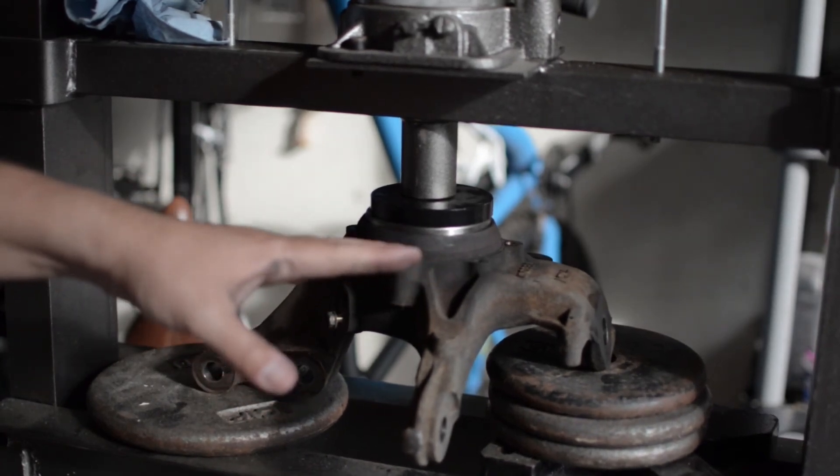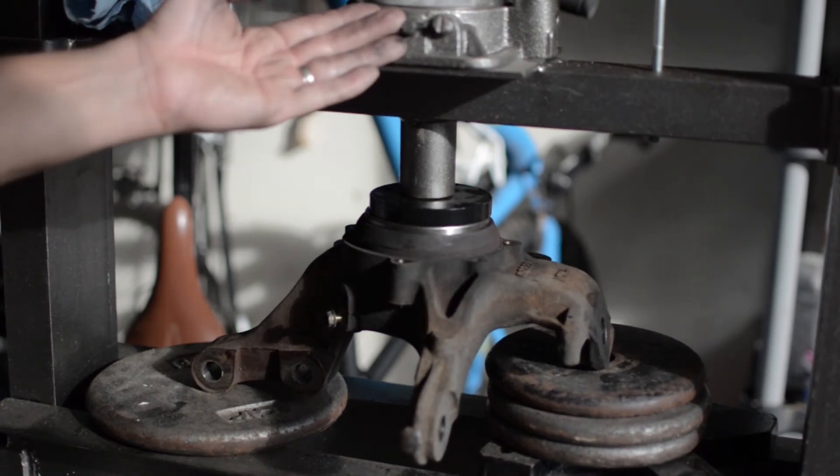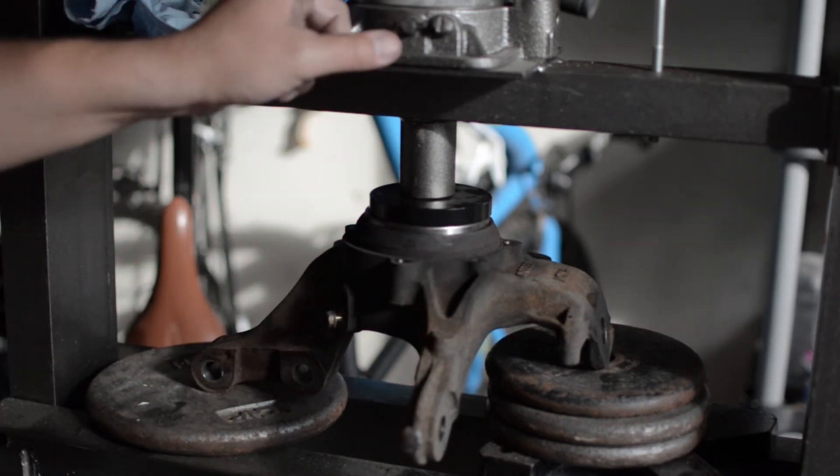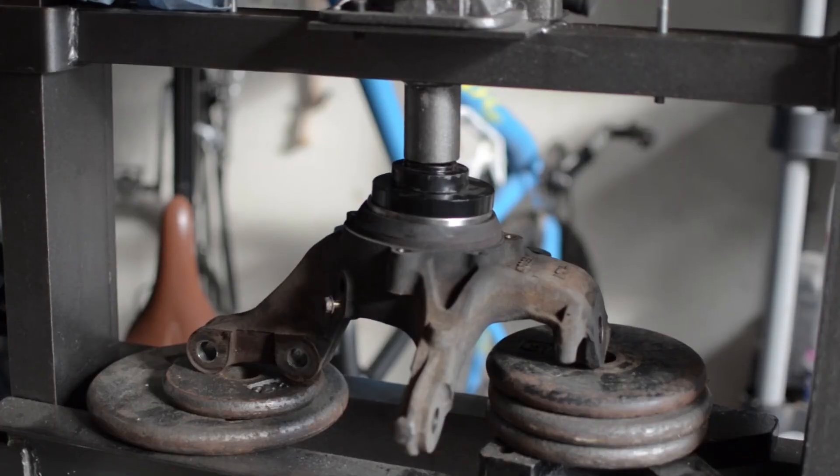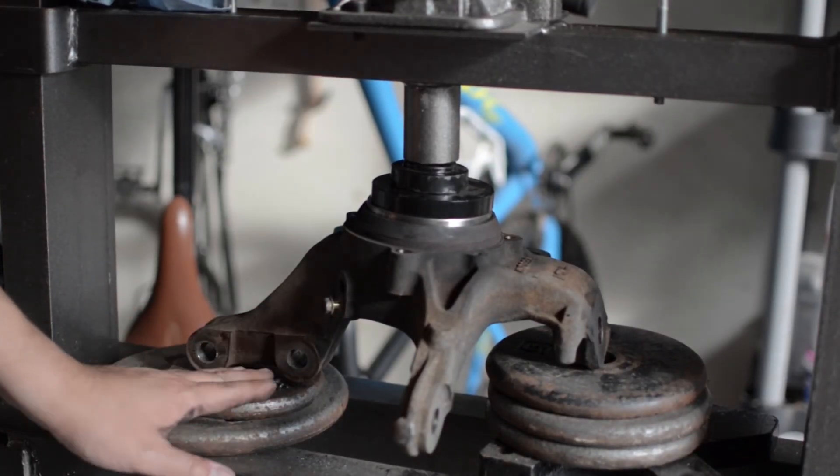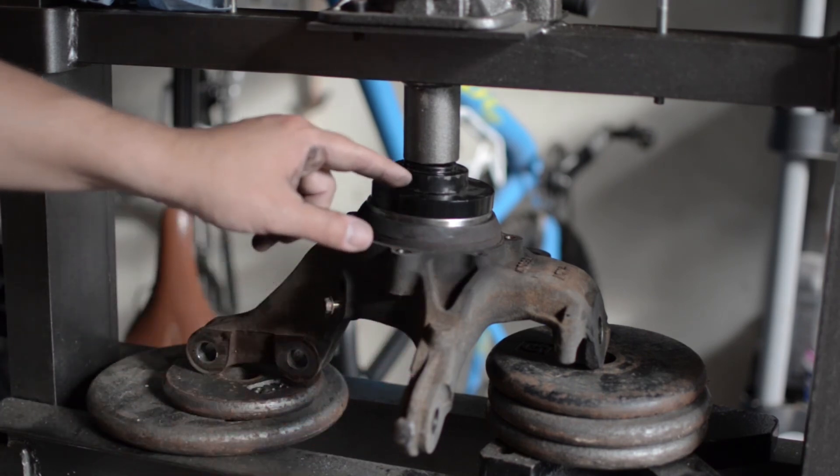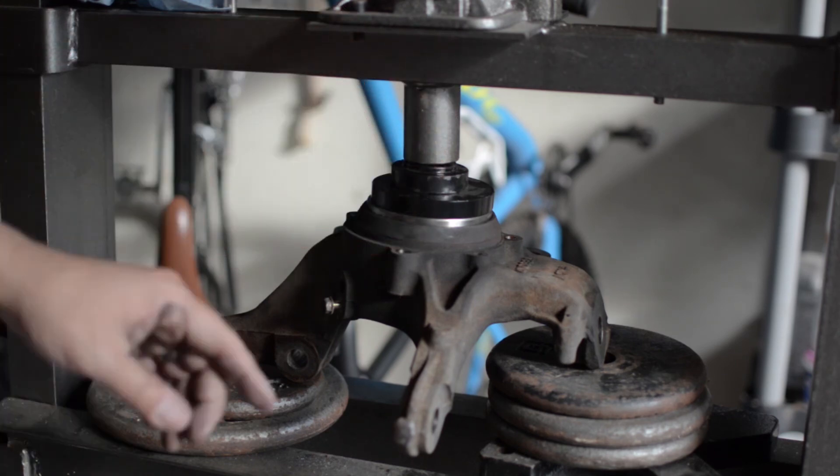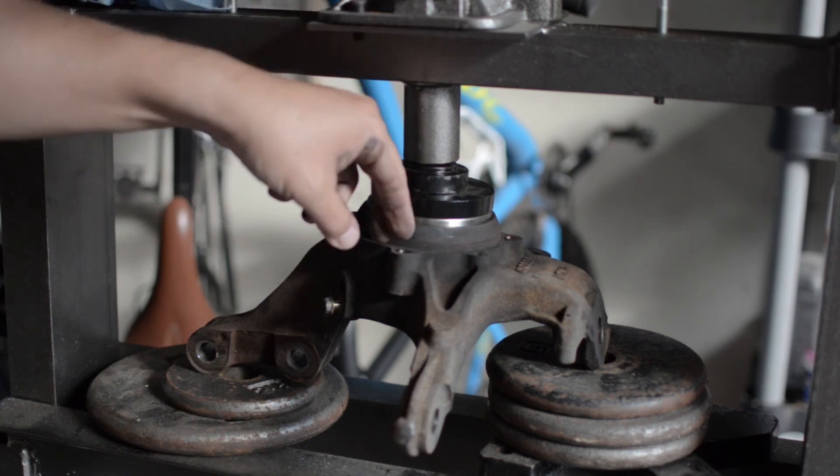I'm going to lift up the shop press, release the tension, and increase the height just a little bit so the bottle jack doesn't have to work so hard and travel. I added one more plate to increase the height of the steering knuckle, and I also added another adapter plate up here to help us push down the bearing so the bottle jack doesn't have to travel so much. Let's get started.